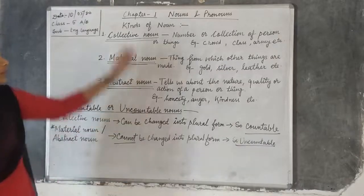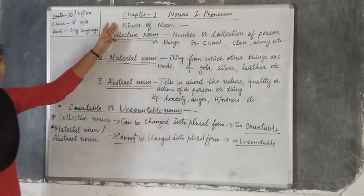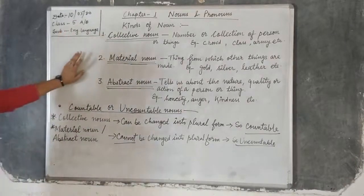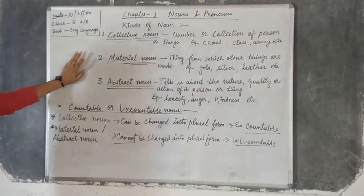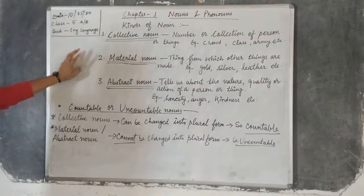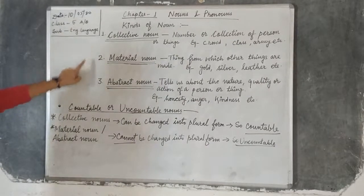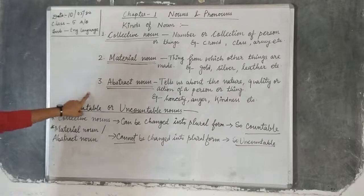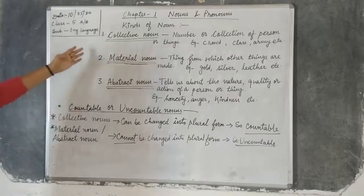Now, let's come to the topic: kinds of noun. In this chapter, we will be studying about only three kinds of noun — collective noun, material noun, and abstract noun. Let's start from the first.